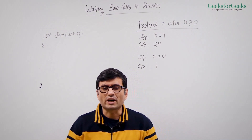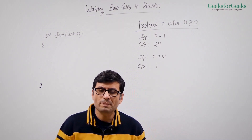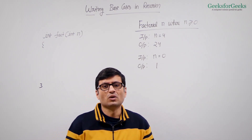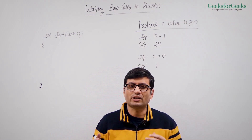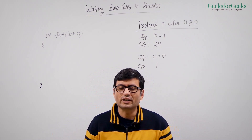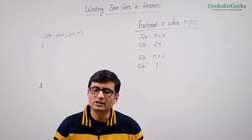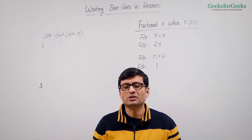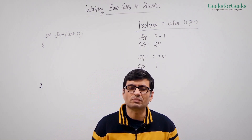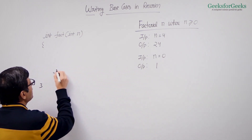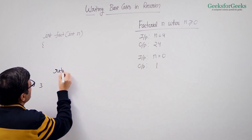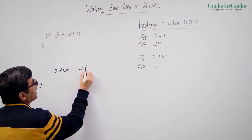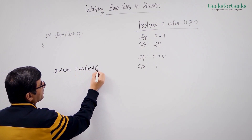Let us first consider the factorial problem and write down the recursive code. One thing we can easily guess is that factorial of n can be recursively computed as n times factorial of n minus one. So we write: return n into factorial of n minus one.